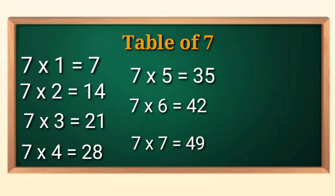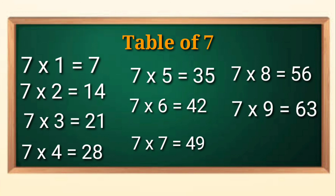Seven sevens are forty-nine. Seven eights are fifty-six. Seven nines are sixty-three. Seven tens are seventy.